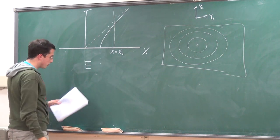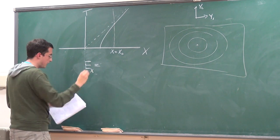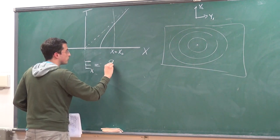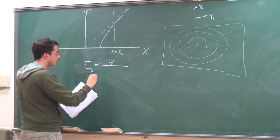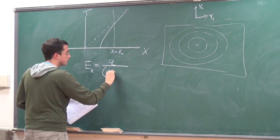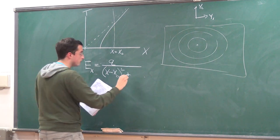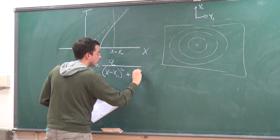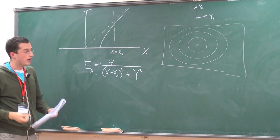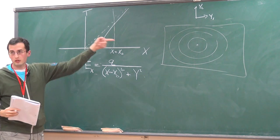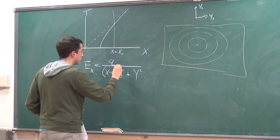In the rest frame of the electron, the electric field in the x direction — there's a charge factor, a distance factor, radius squared — if the electron falls in at y equals 0 and x equals x-naught. Because I only want this component of it, I have to put in a cosine of the angle factor.